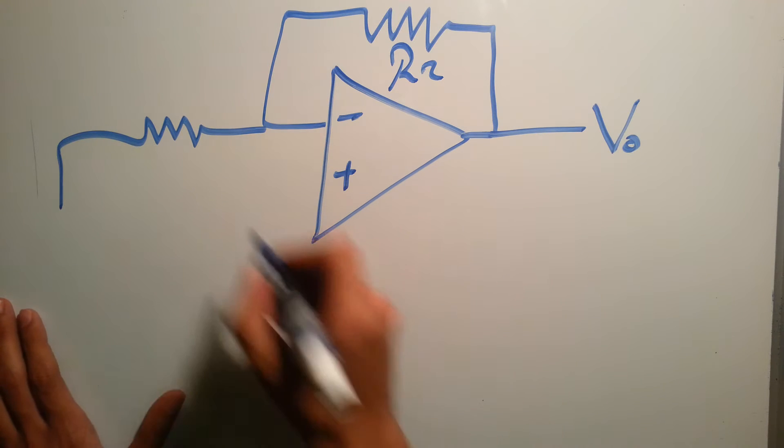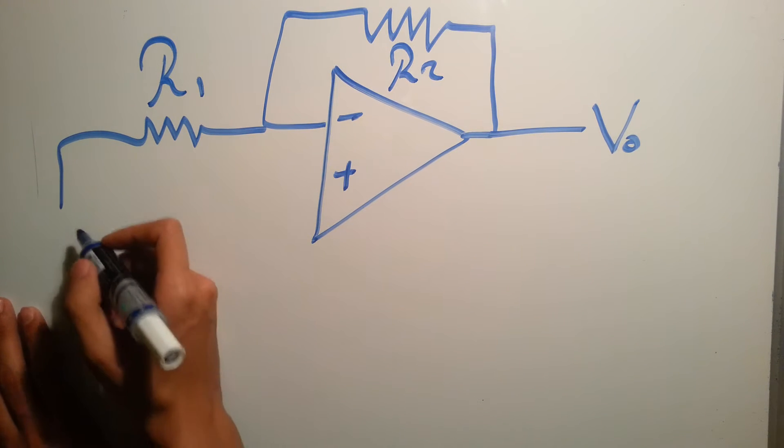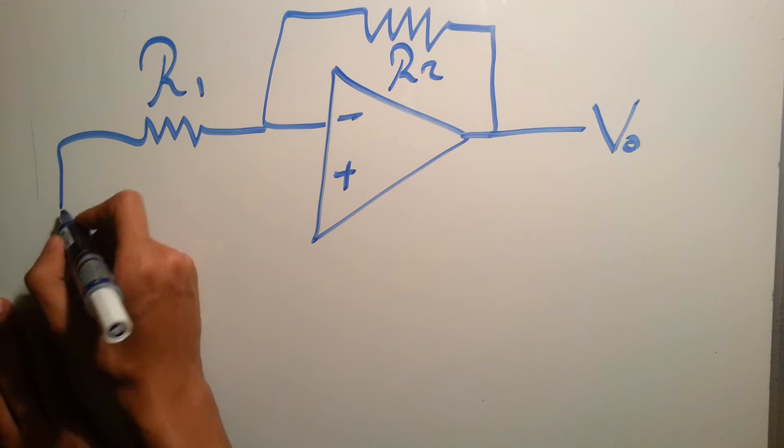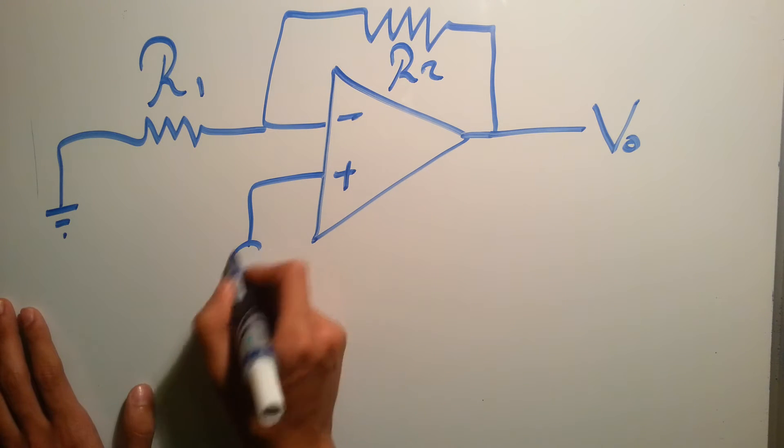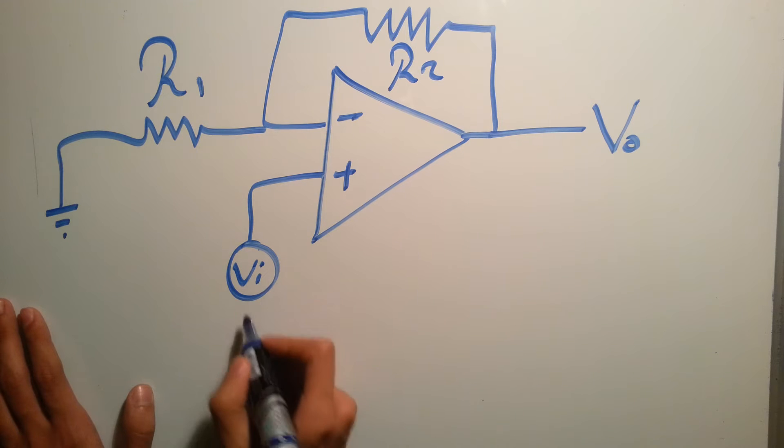In the inverting amplifier we had R1 connected to the source, while this time it will be connected to the ground. The source VI will be connected to the other side, to the positive side.